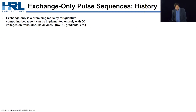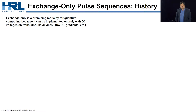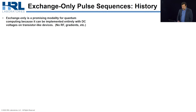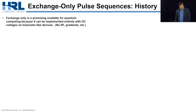Exchange-only is a modality for qubits that is beneficial, ironically, because of its simplicity. If you have an exchange-only encoding, you can implement an array of qubits using only DC voltages on transistor-like devices. You don't need magnetic field gradients, RF, lasers, or other things that tend to be lower fidelity than the exchange interaction, and that's very good for scaling.